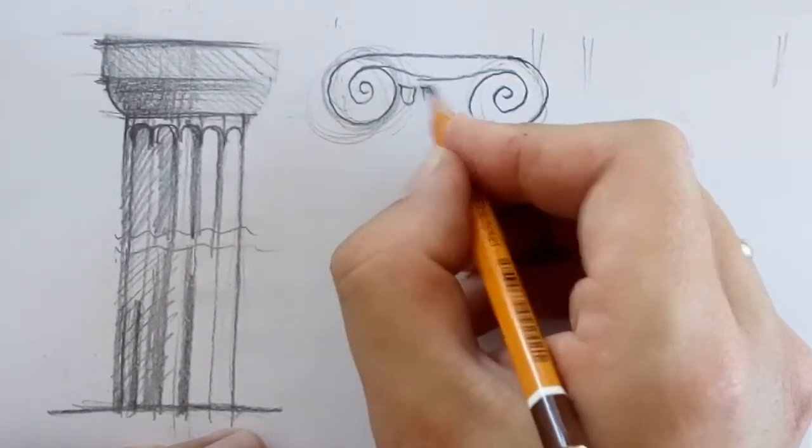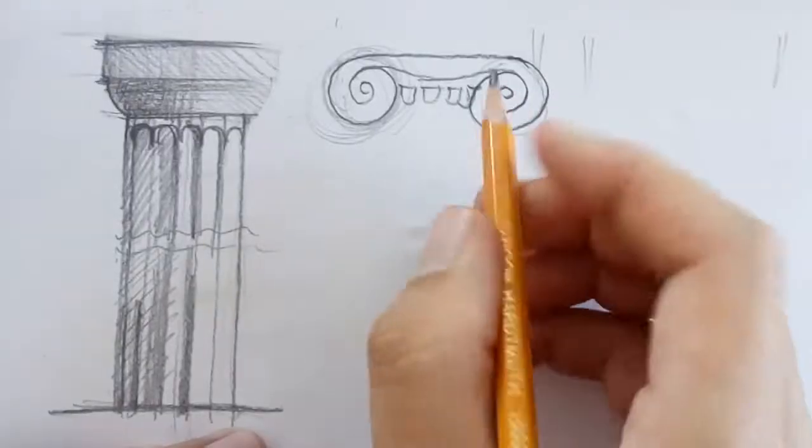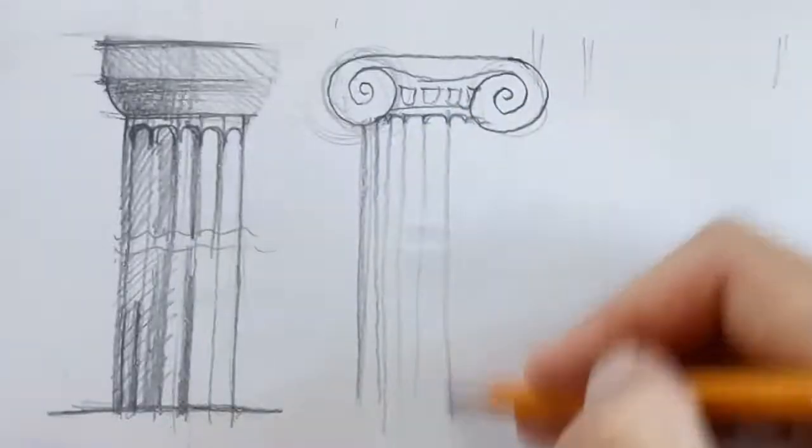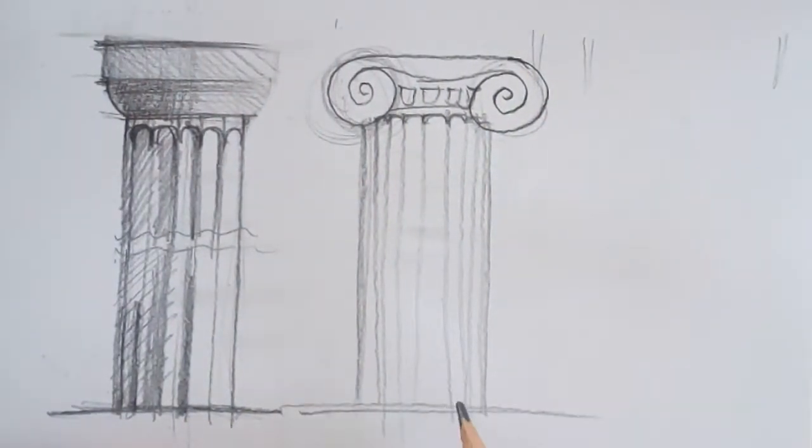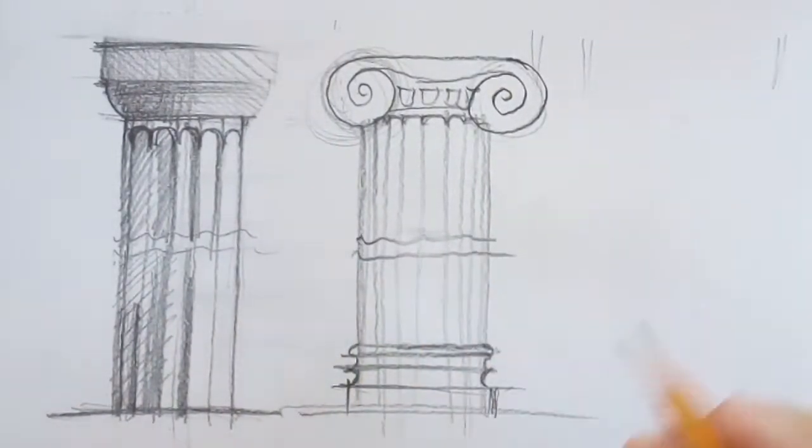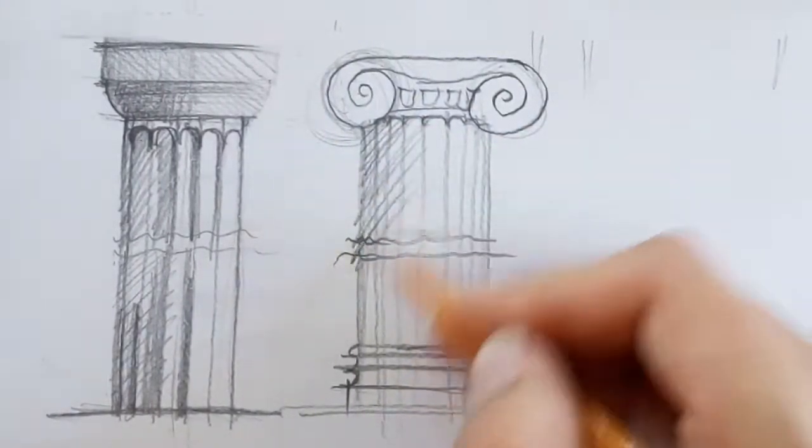The other two types have a base and shaft. The difference is just the capital. Ionic has two scrolls on a pillow. Corinthian is decorated with acanthus leaves and scrolls.